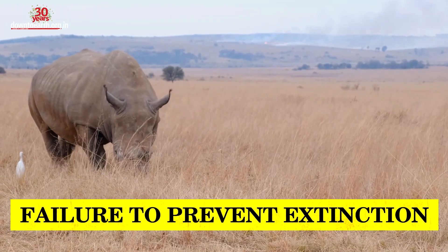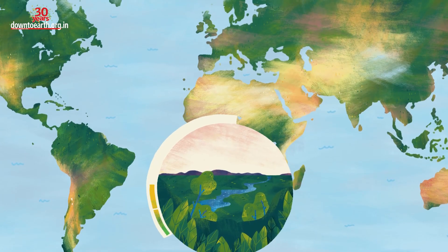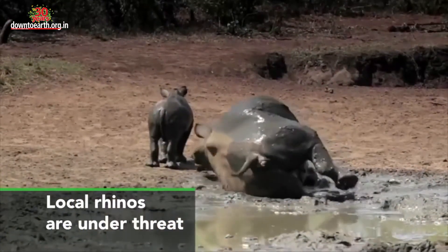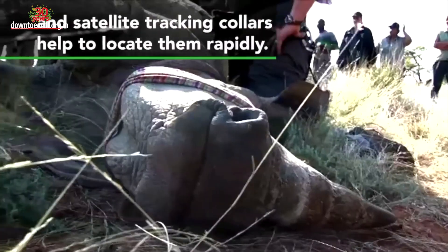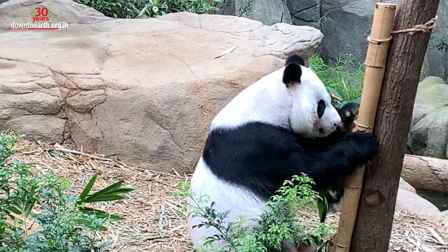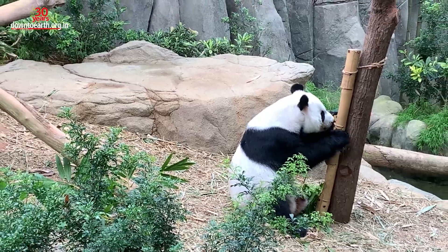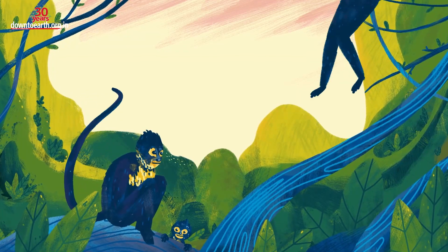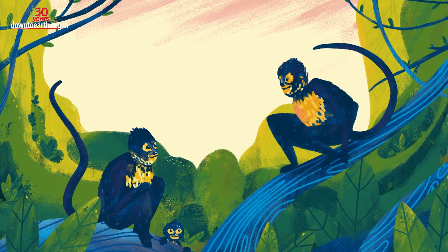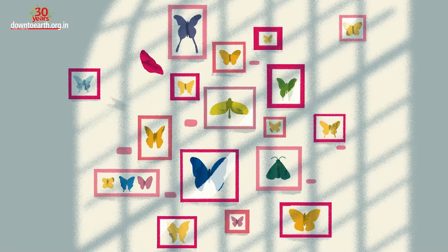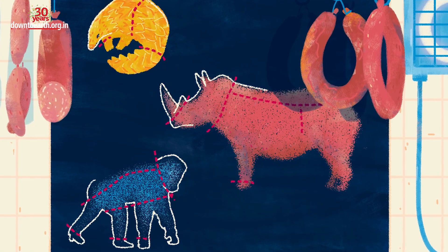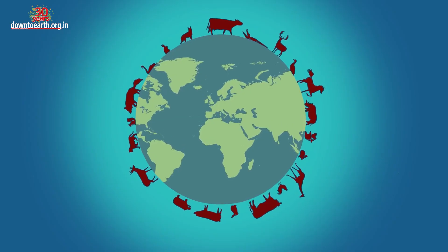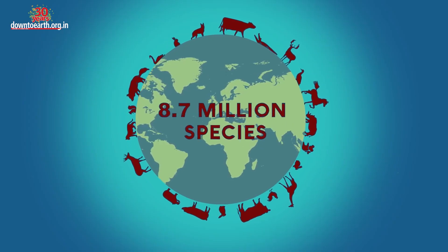Failure to Prevent Extinction of Species: Under SDG target 15.5, the world was supposed to halt, protect and prevent the extinction of threatened species by 2020. However, the risk of species extinction continued to rise. The risk is highest in Asia and small island developing states. Around 40,000 species are documented to be at risk of extinction over the coming decades, said Zhang. The trends in the Red List Index, a key indicator under SDG 15, clearly indicate that the world has failed to address the extinction of species.